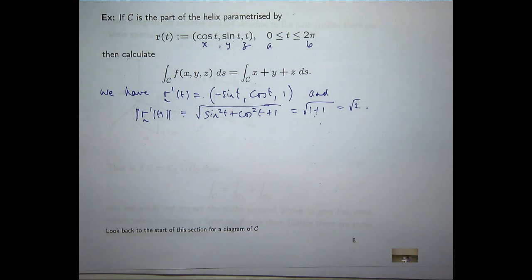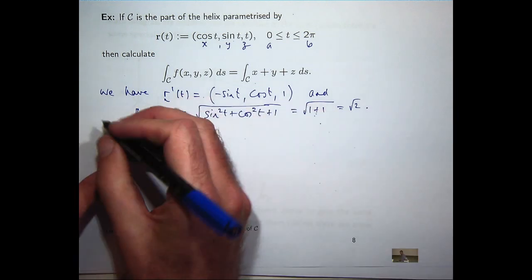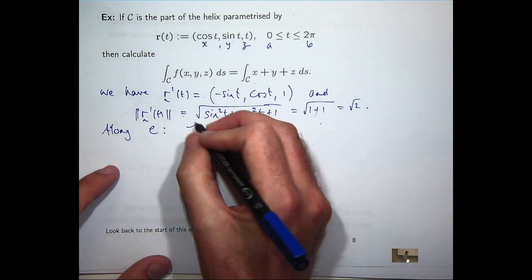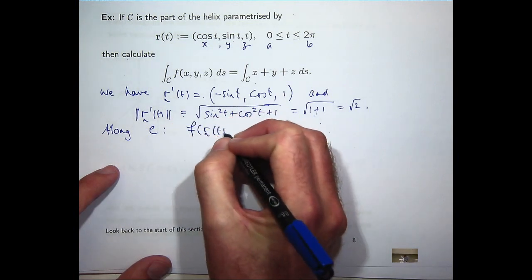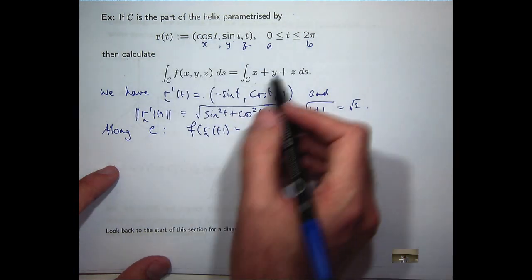So physically, this would be a tangent vector to the helix. Along c, f evaluated along our parametrization for c, that's our f.